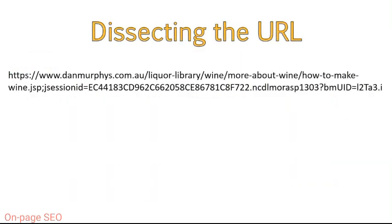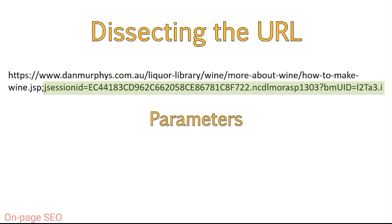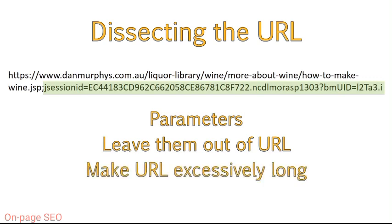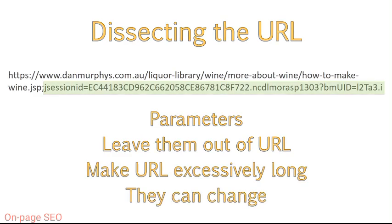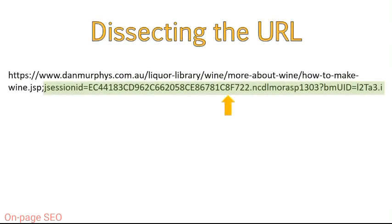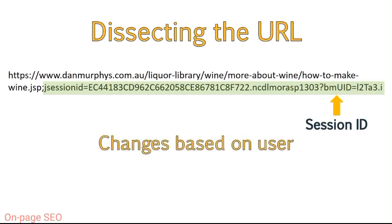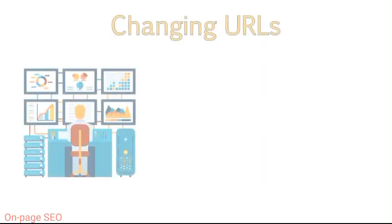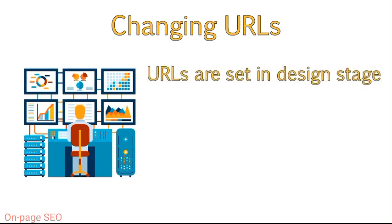Parameters not only make your URLs excessively long, but oftentimes the parameter can change based on a variety of factors. This particular parameter is a session ID, which means it changes based on the user. This can create problems with duplicate content, as the URL has changed but the content has remained the same. Unless we as SEOs have been brought in during the design stages of a website, which is unfortunately a rare occurrence, we have little to say in how URLs are displayed and what subdirectories are created. You can always change the URL after the fact, but remember that page is likely already ranking under the existing URL. Changing it later would mean it would lose some of the history and authority it has built up.